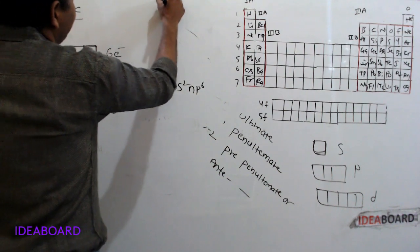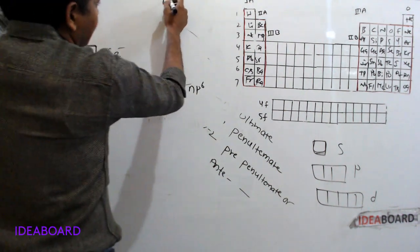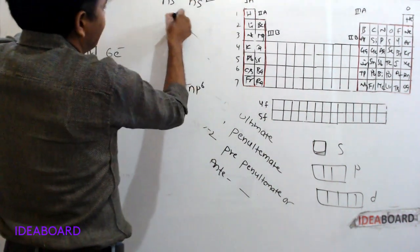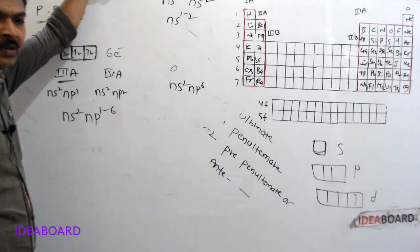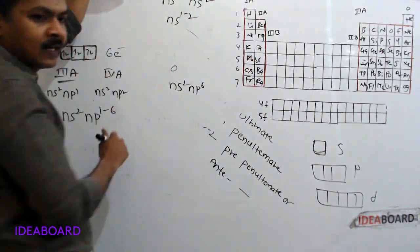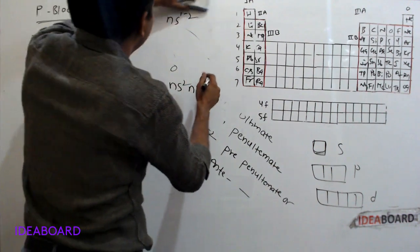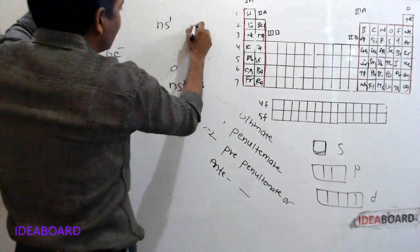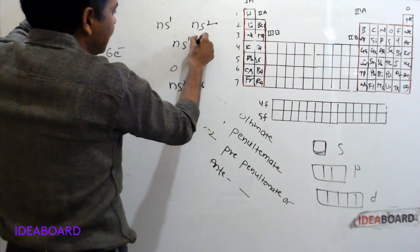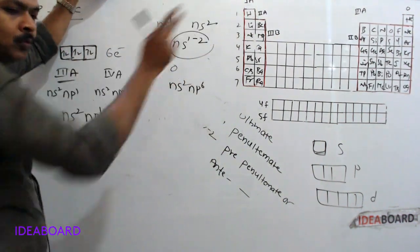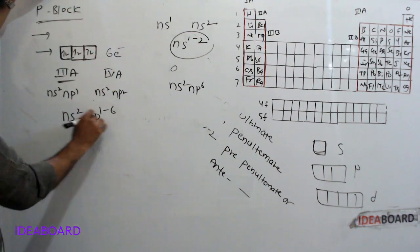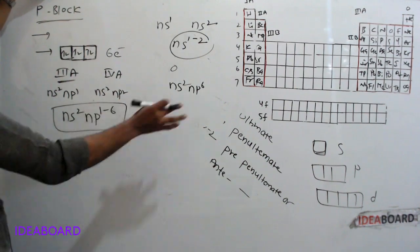To recap: S block contains 2 groups — first A (Ns1) and second A (Ns2), so we can write Ns1-2. P block contains 6 groups, from third A to zero group, with general configuration Ns2, Np1-6.